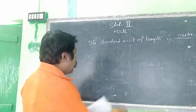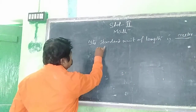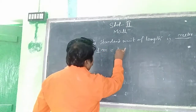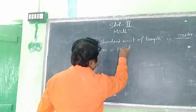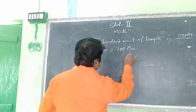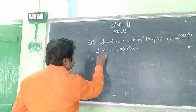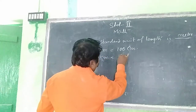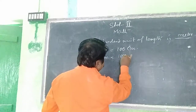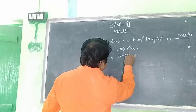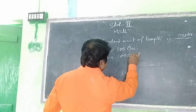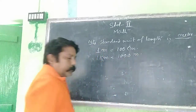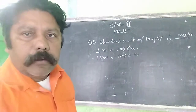One meter equals one hundred centimeters. One kilometer equals one thousand meters. Then we read a table.